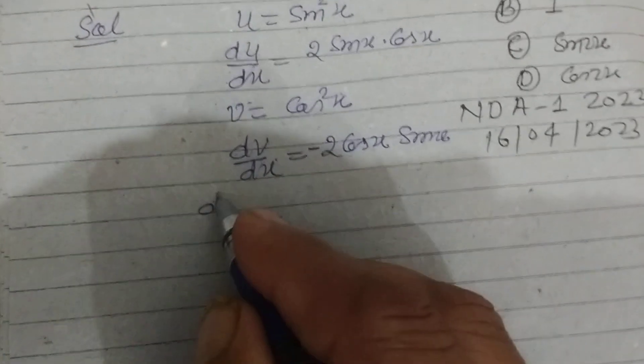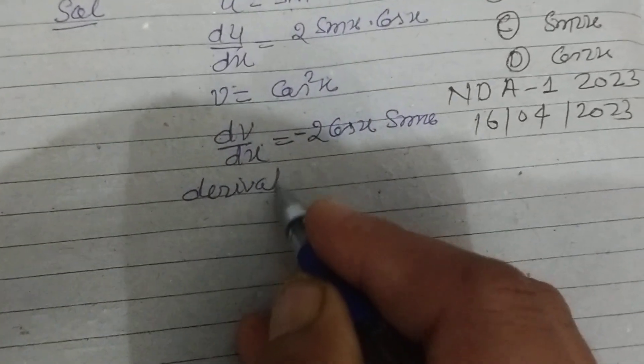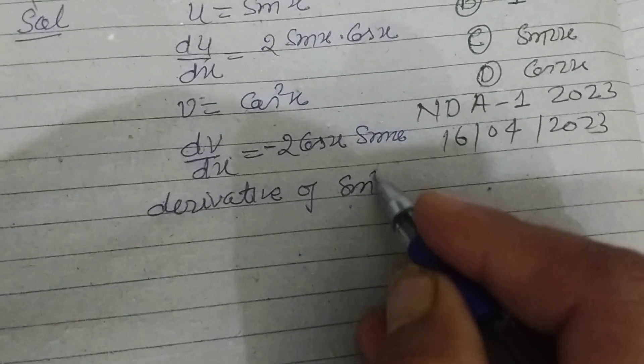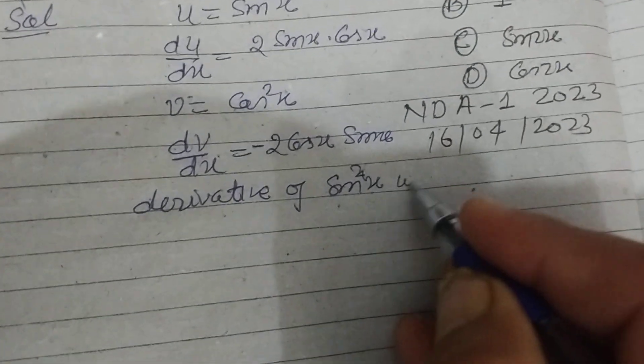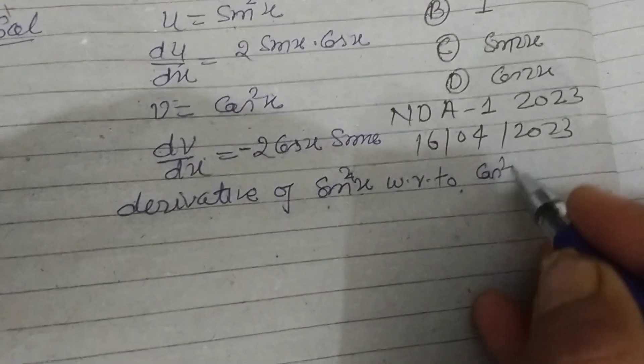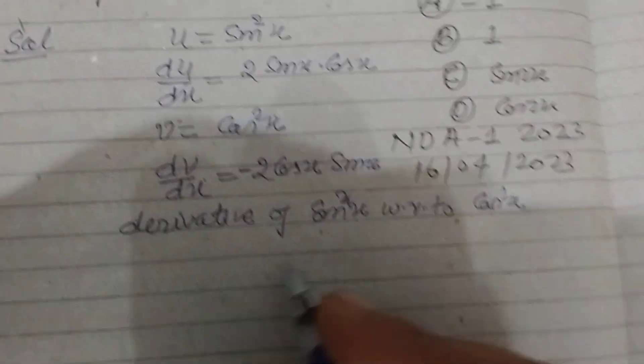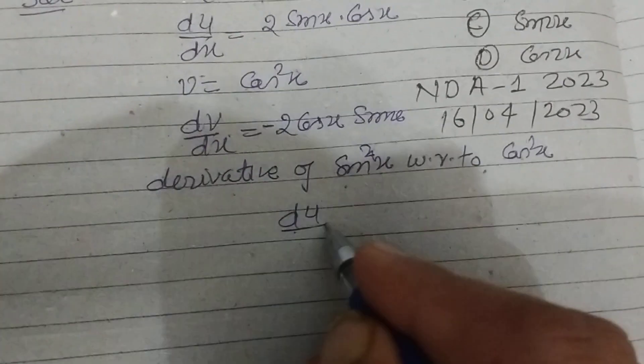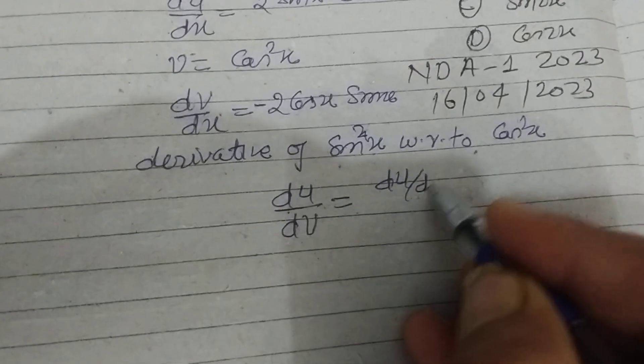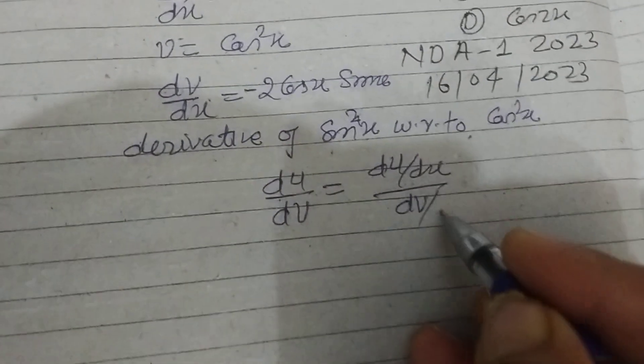So now, derivative of sin square x with respect to cos square x. This is du upon dv, so du upon dx over dv upon dx.